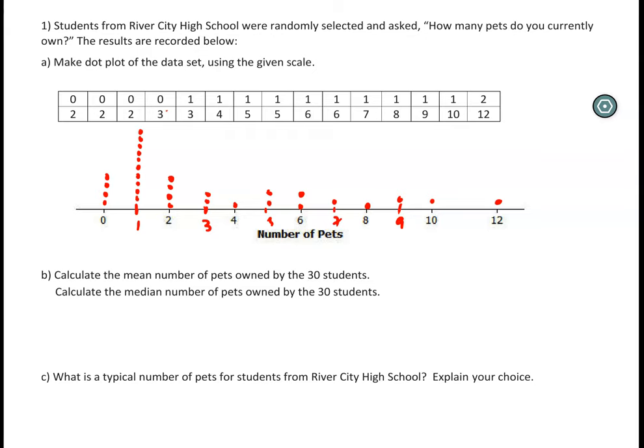Calculate the mean number of pets owned by the thirty students, and then calculate the median. So I'm just going to add up the total here. I could utilize the calculator and plug it into my table. So I'll give you guys a second to try that. See what you come up with. Feel free to pause the video and give that a shot. Welcome back. And hopefully you were able to say that the mean came to 3.2 and the median was two.